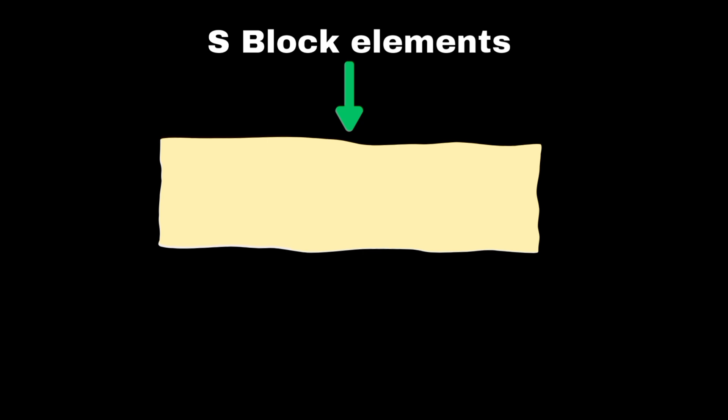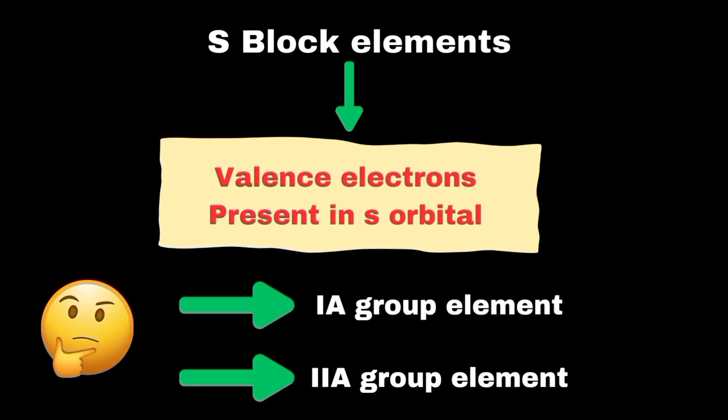The S block elements are those which contain their valence electrons in S orbital, such as members of group 1A and 2A.